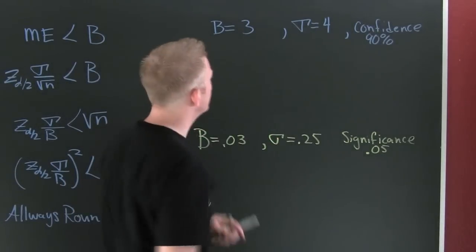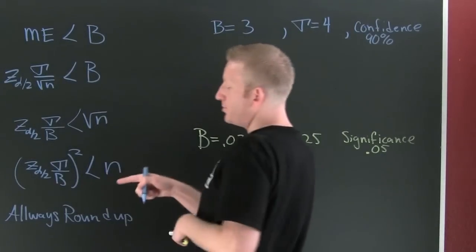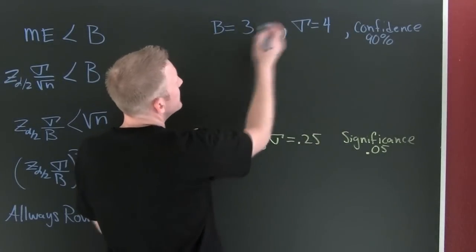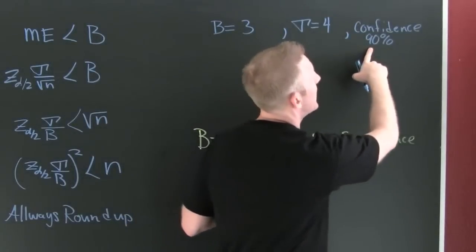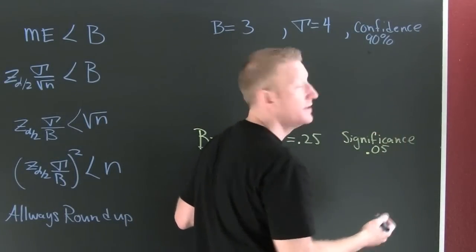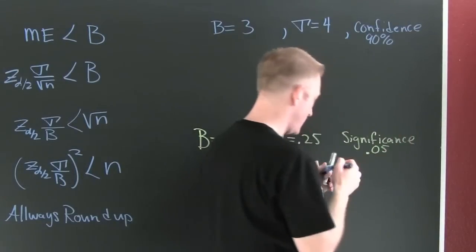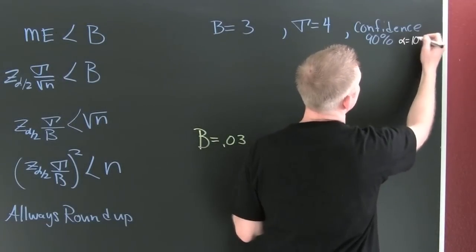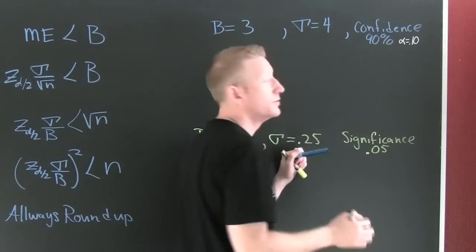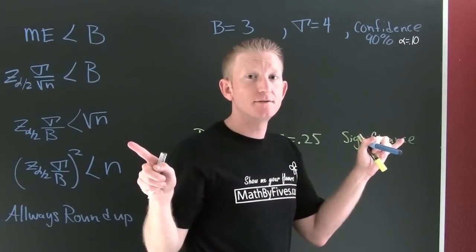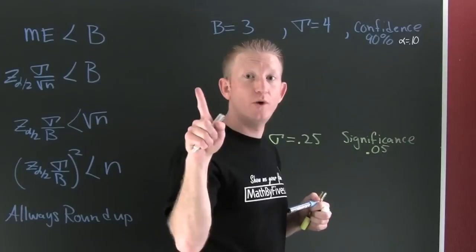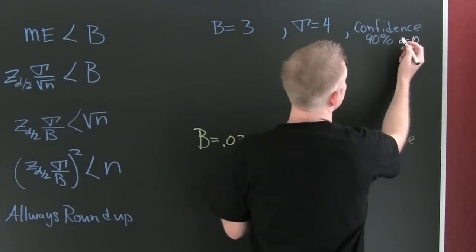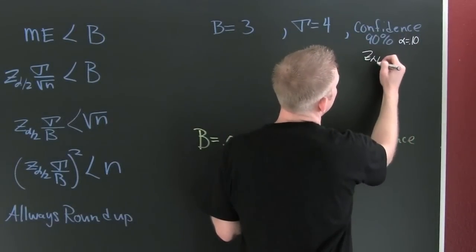Let's find our sample size. What do I need? I need to plug it in. I need a z alpha over two. Let's talk about that. Here's a 90% confidence level. So what's my alpha? My alpha is going to be 10% or 0.10. Now that's the area in two tails, so we go to our z chart and we look up one tail, 0.05.